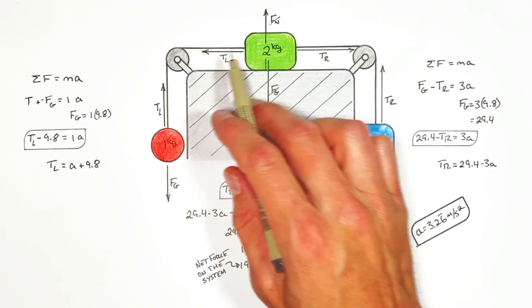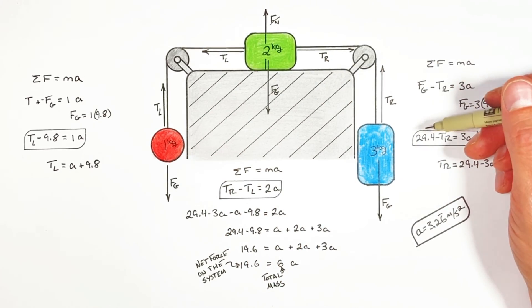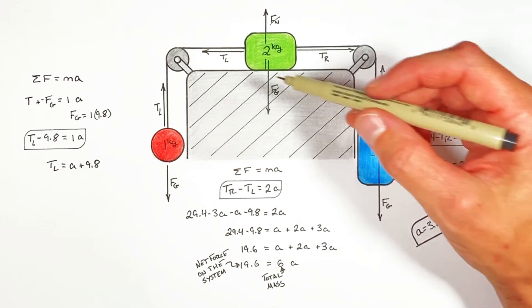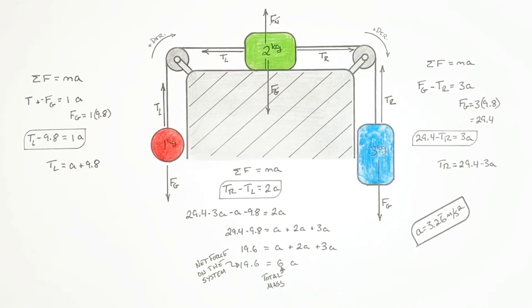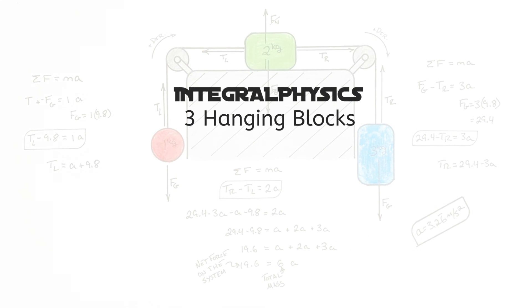The first was realizing that the tension in the two strings was not the same. The second was establishing a positive direction. Which strange as it may be looked something like this. So I hope this kept somebody out there from crying all over their physics book. And on that note, that's all for now.